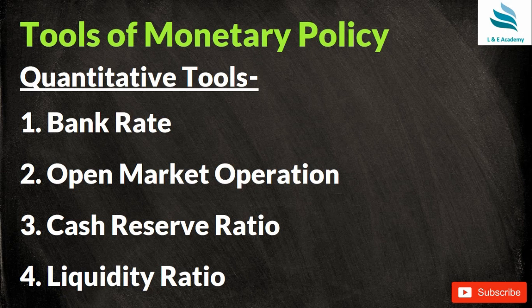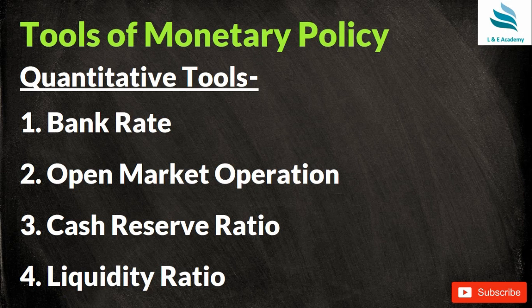The fourth important quantitative tool is the liquidity adjustment facility. LAF is a monetary policy instrument which allows commercial banks and primary dealers to borrow money through repurchasing agreements. Banks use LAF to adjust their day-to-day fluctuations in liquidity. If a bank falls short of money on a particular day, it can borrow from RBI through LAF. Related instruments include the marginal standing facility, liquidity adjustment facility, and statutory liquidity ratio.